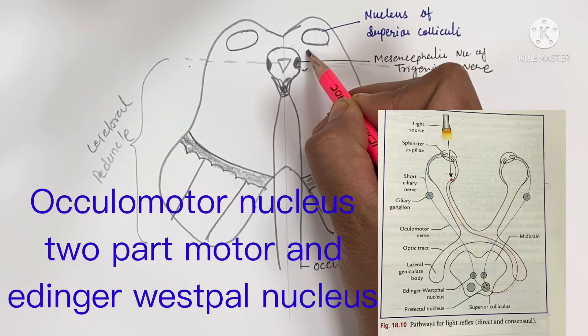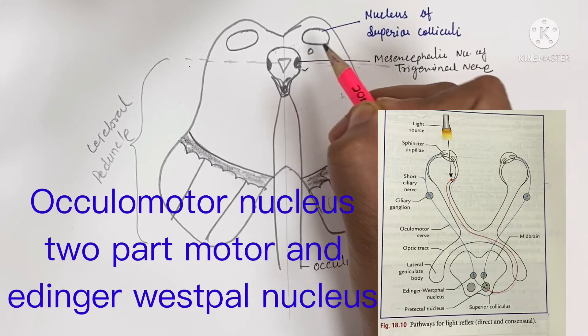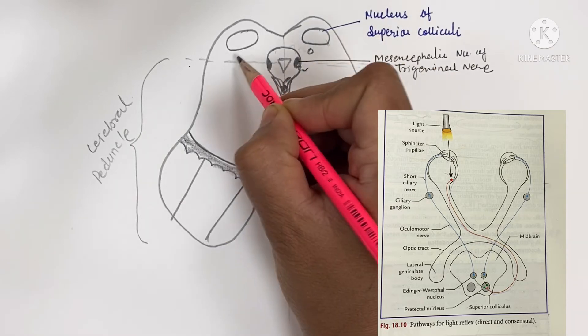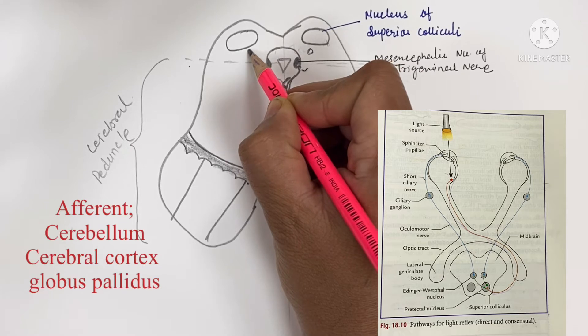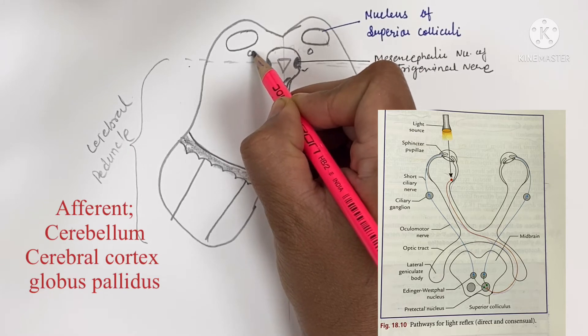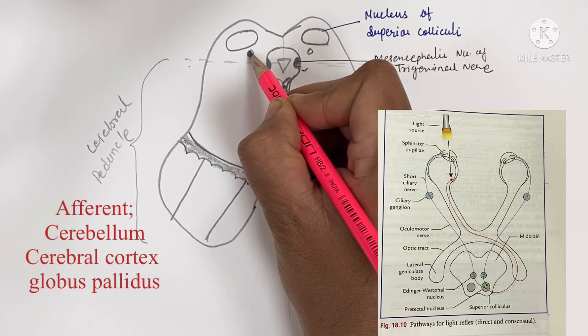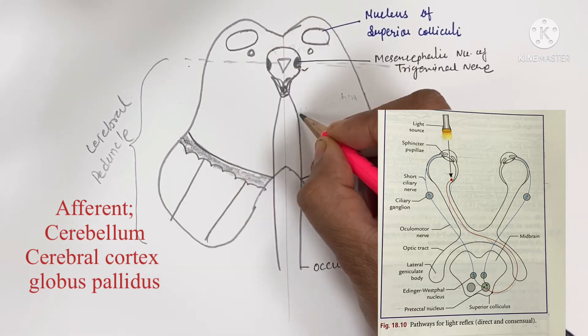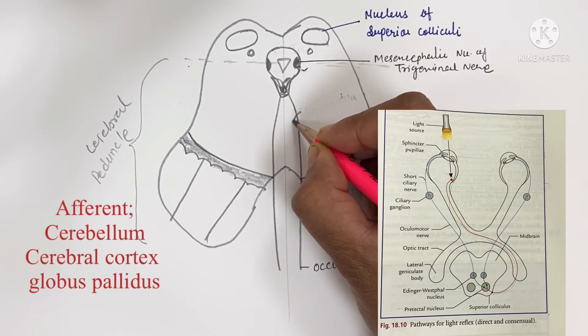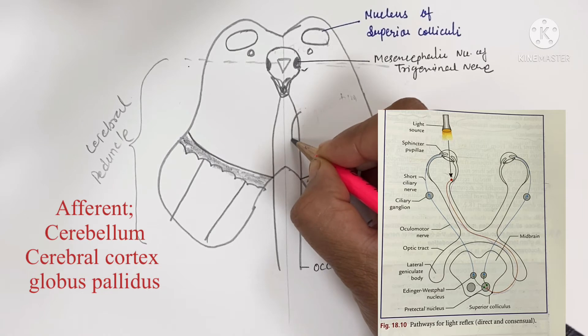Pre-tectal nucleus is related to the light reflex. Afferent fibers arise from the optic tract and efferent fibers go to the Edinger-Westphal nucleus. Its lesion causes Argyle Robertson pupil, in which the light reflex is lost but accommodation reflex is present.